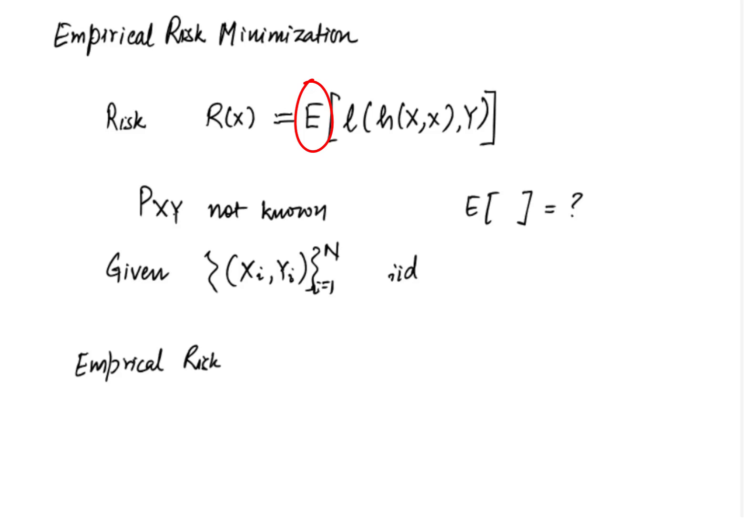So with this restriction in mind we have to resort to minimizing the empirical risk which is given by rn of x equal to 1 over n summation over i from 1 to n l of h evaluated at xi comma small x comma yi which is basically a good approximation to the expected loss function from the law of large numbers.